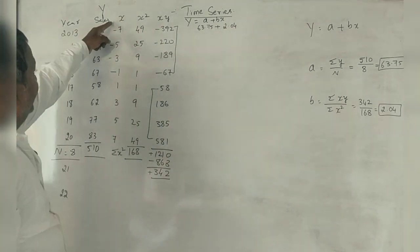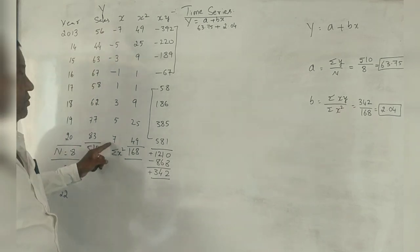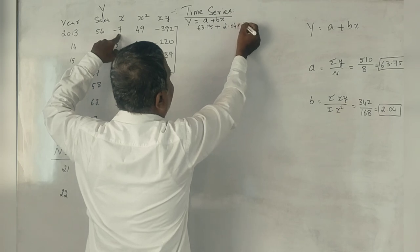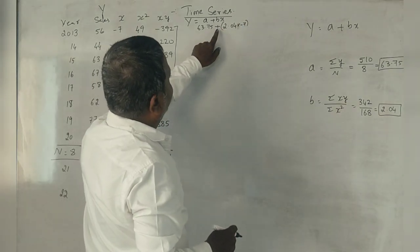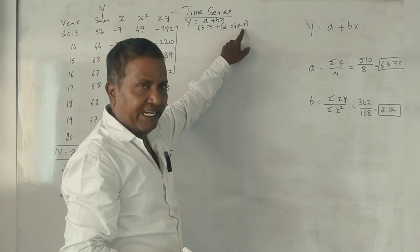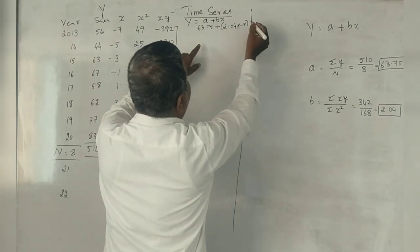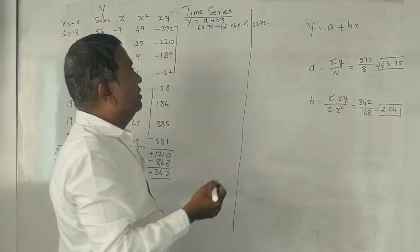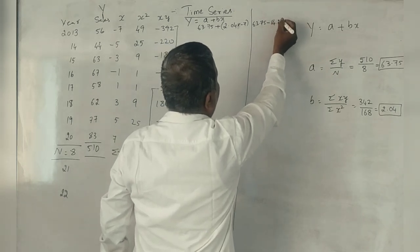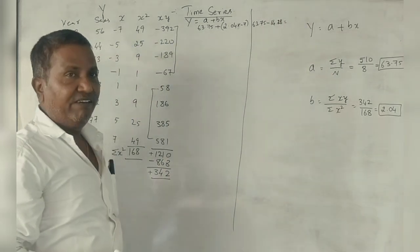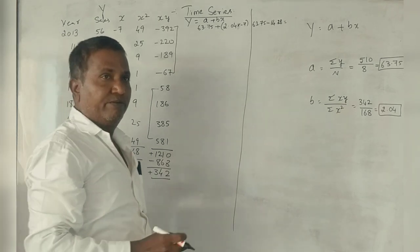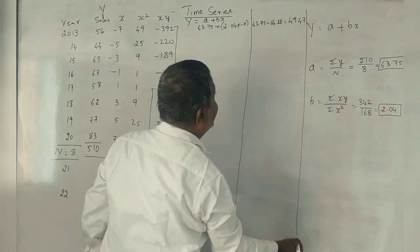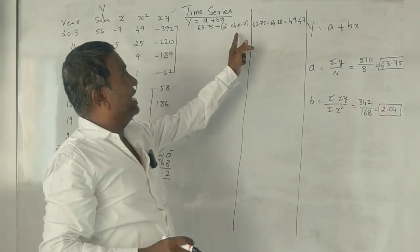A equals 63.75, B equals 2.04. What is X value here? X value is minus 7. Now see, whenever there is plus and minus, plus into minus is minus, correct? Now 63.75 minus 2.04 times 7 equals 63.75 minus 14.28. What is the answer? 49.47. This is the answer.